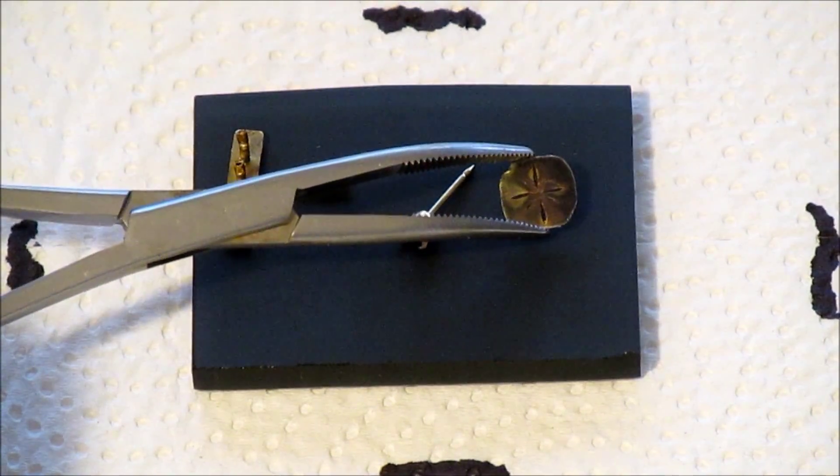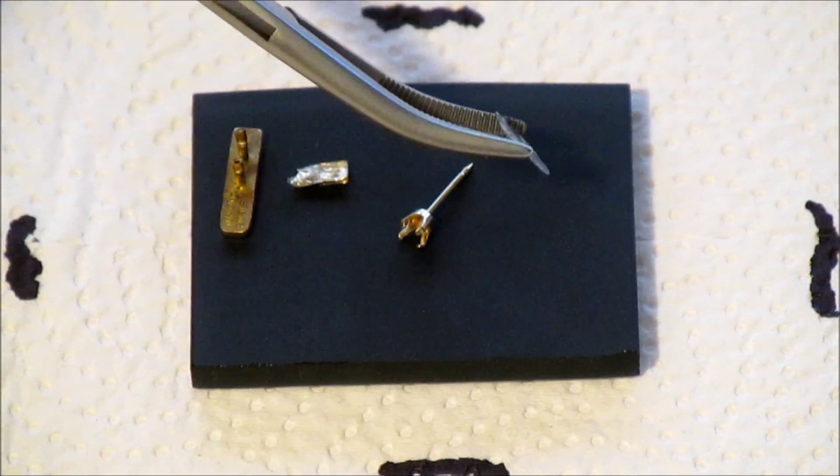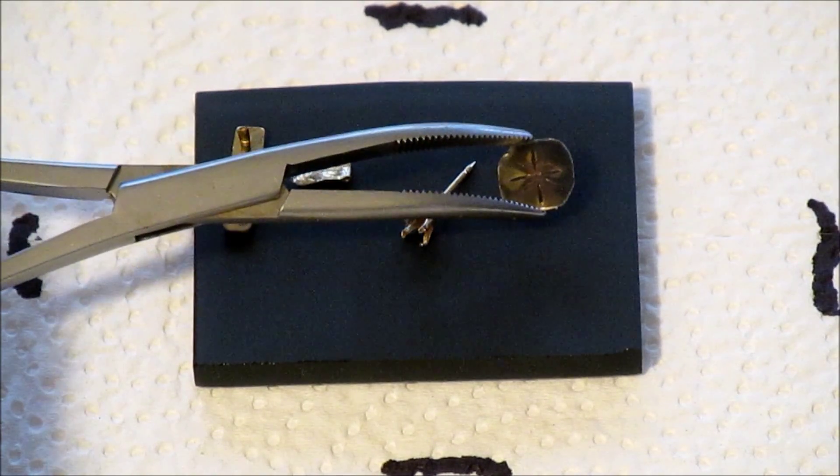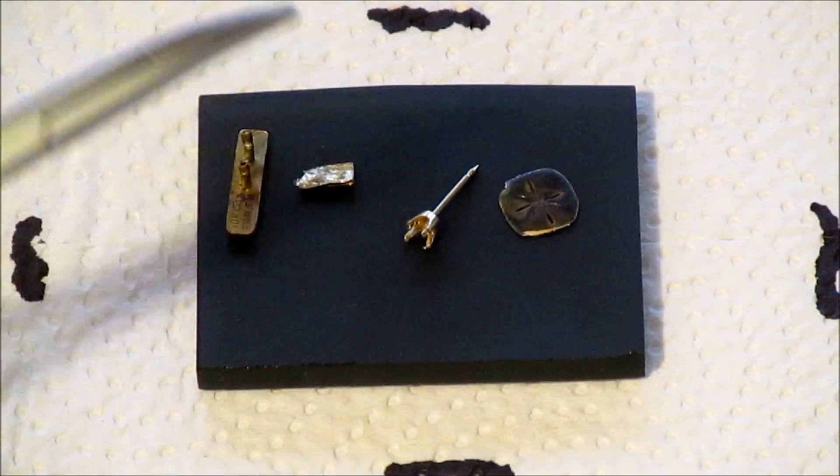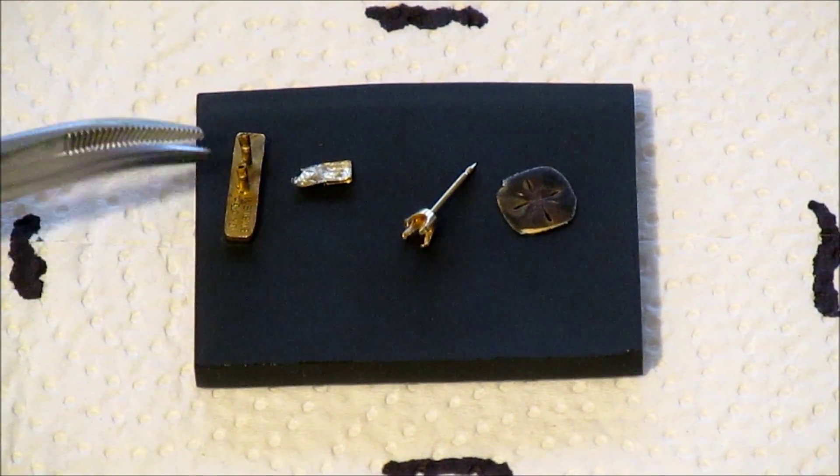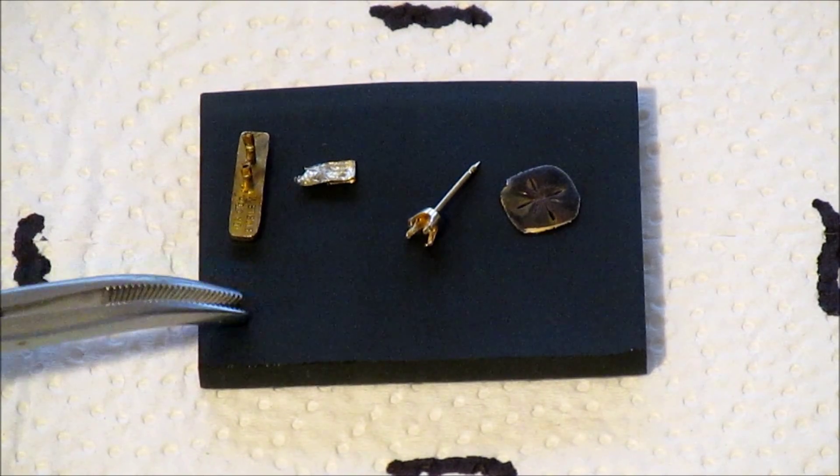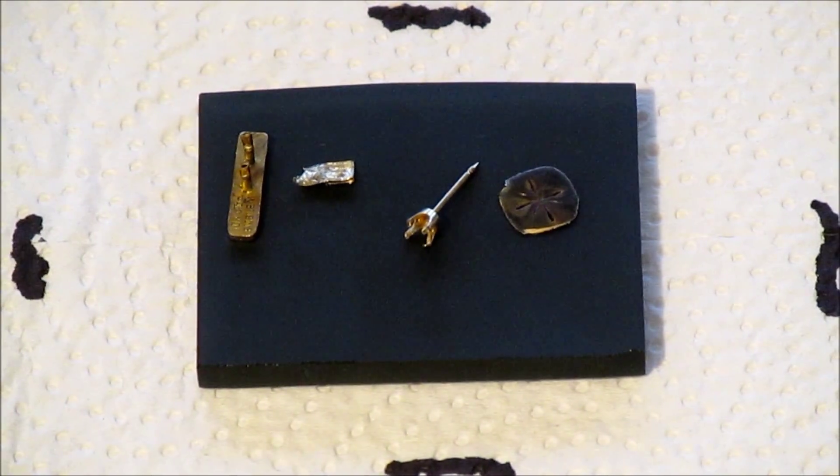And then we have a piece that came out of a ring, a very thin piece that we'll be testing. First thing we're going to do is scratch the gold onto this test stone, which is a piece of glass. I'll do that real quick.